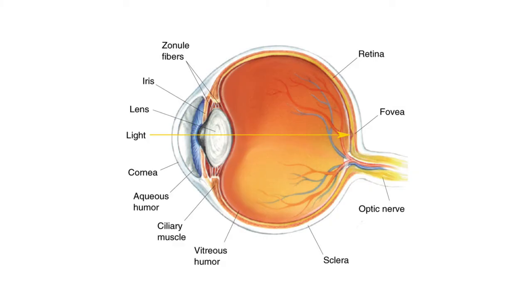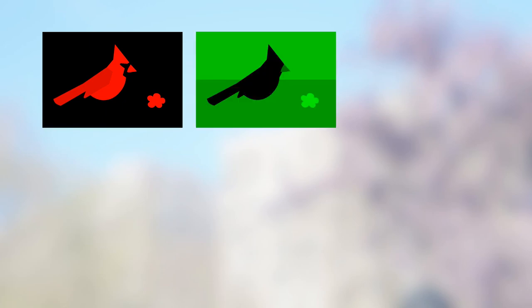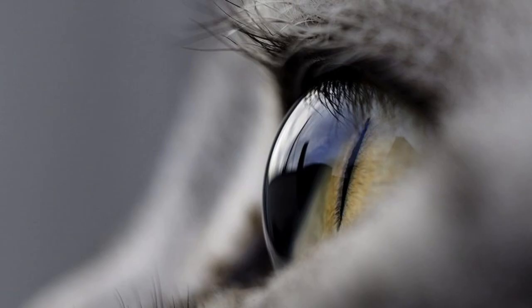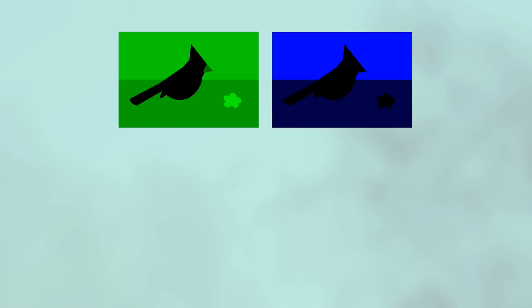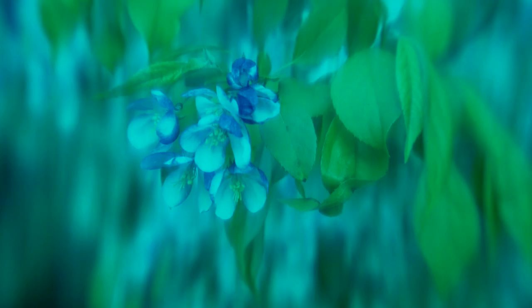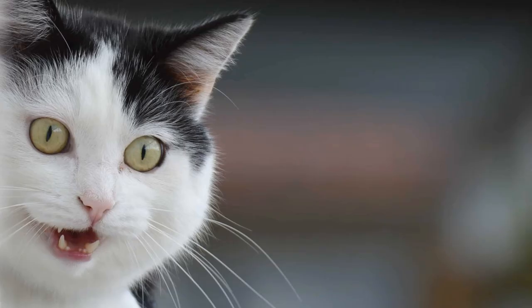One more thing: cats can't see color very well. Humans have three types of color-sensitive cells in the retina corresponding to red, green, and blue — all the colors we see are a combination of those three. Cats only have two of those cell types: one sensitive to yellow-green light and the other sensitive to blue. So the cat's color vision might look something like this. Birds, on the other hand, can see more colors than we can — be sure to check out my video on bird vision.